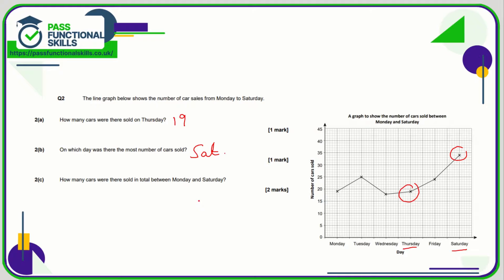How many cars were there sold in total between Monday and Saturday? Well let's work out: Monday is 19, Tuesday is 25, Wednesday is 18, Thursday is 19, Friday is 24, and Saturday is 34. Unfortunately we're not allowed to use a calculator so we're going to have to be careful adding these numbers up. But if you add them up you should come to the final answer which is 139 cars.